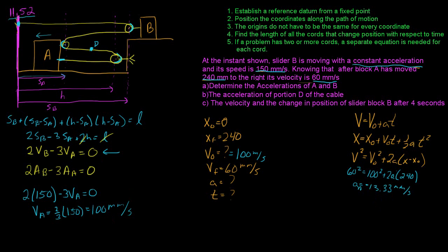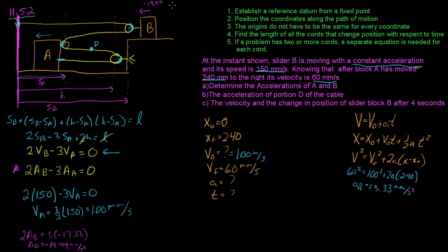Using the pulley acceleration relationship 2·aB = 3·aA: 2·aB = 3·(−13.33), so aB = −19.99 mm/s². The acceleration of B is also negative, meaning it's directed to the left. This completes Part A.